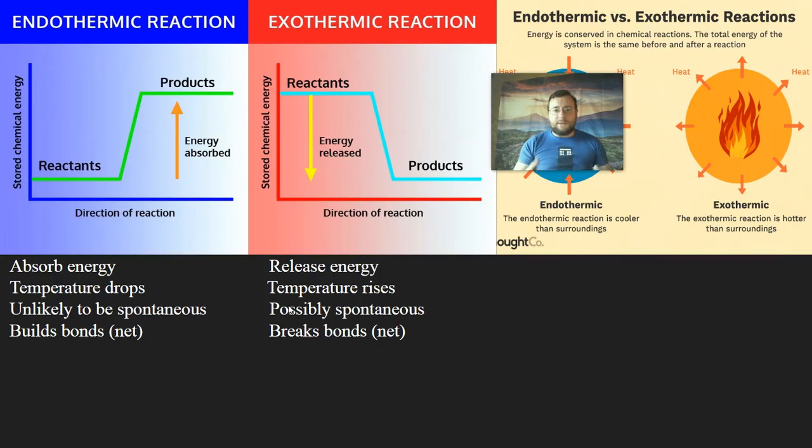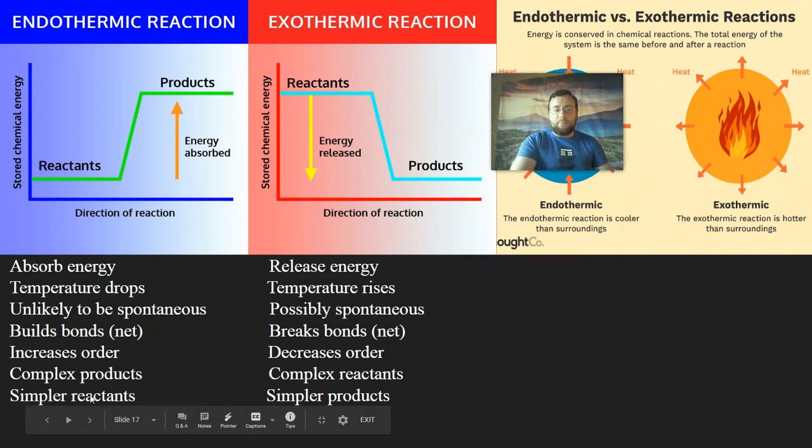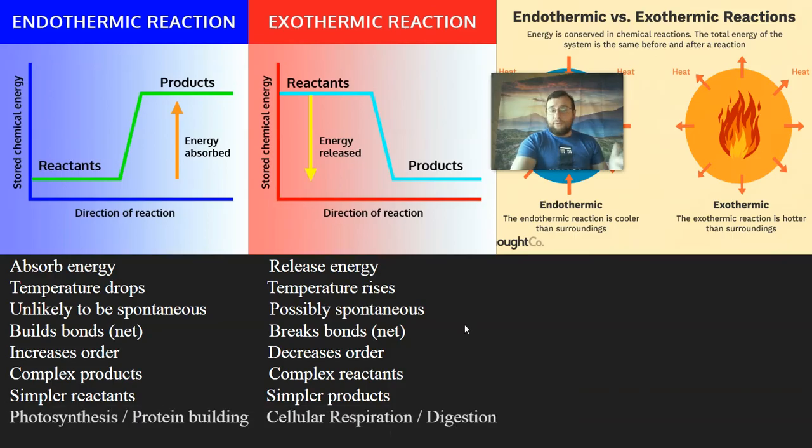Endothermic reactions tend to build more bonds than they break. They build complex things, more complex bonds, while the exothermic ones will tend to break more bonds or build less complex bonds. So that means endothermic reactions will increase order, while exothermic will increase disorder or decrease order. You make complex products that have more energy than the reactants. So the reactants are simpler in endothermic reactions versus exothermic ones, which make complex reactants in a simpler product. So you're losing order, right? So for example, in photosynthesis, you get simpler things like carbon dioxide and water to make something complex like glucose. While in cell respiration, you do the exact opposite. You break down the glucose into the simpler carbon dioxide and water.